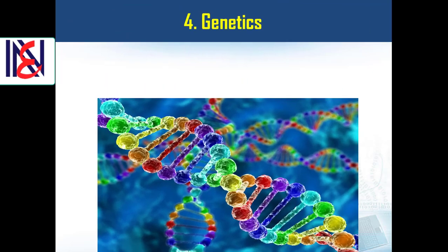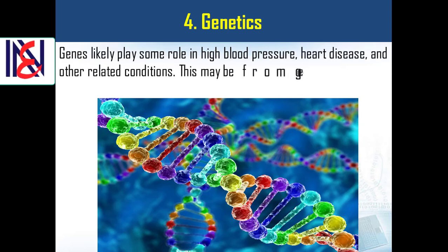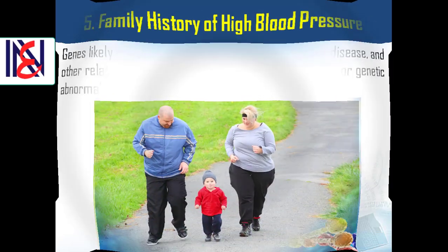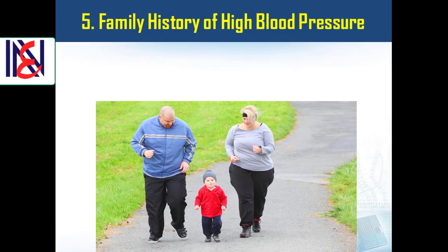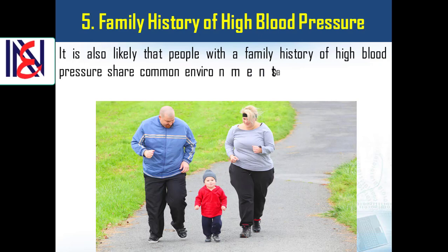Fourth, genetics. Genes likely play some role in high blood pressure, heart disease, and other related conditions. This may be from gene mutations or genetic abnormalities inherited from your parents. Fifth, family history of high blood pressure. People with a family history of high blood pressure share common environments and other potential factors that increase their risk of hypertension.